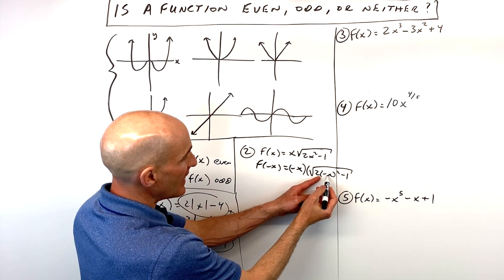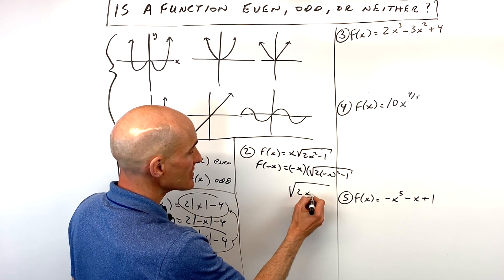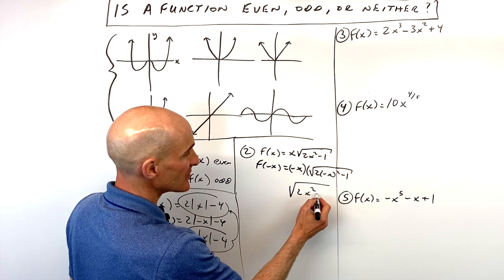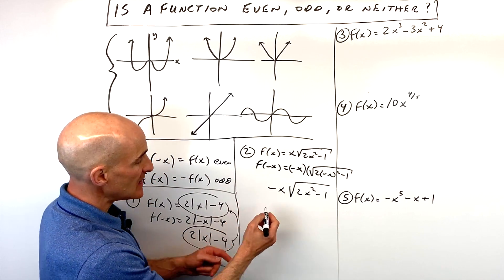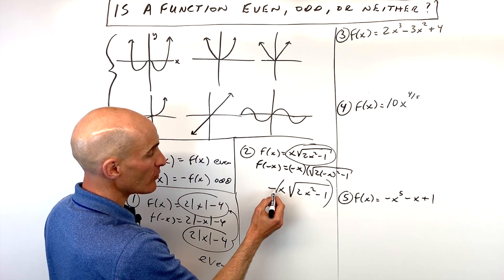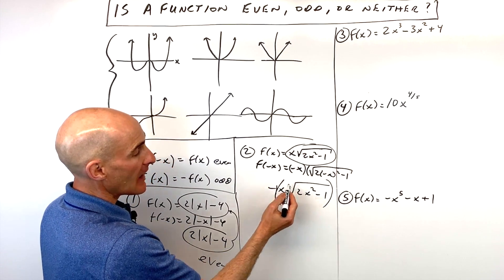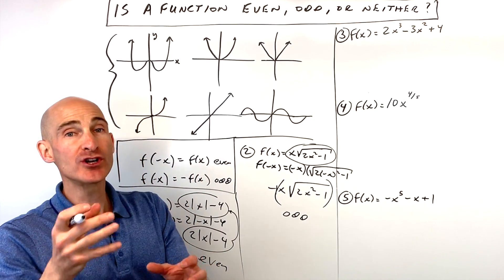But when you have a negative squared, that's going to be the same thing as a positive. It's going to be negative times a negative as a positive. So that's the same as 2x squared minus 1. You can see this whole equation here, it's just like the original function we had. It's just now it's multiplied by negative 1. And that tells us that it's an odd function, meaning it's going to be a rotation around the origin.